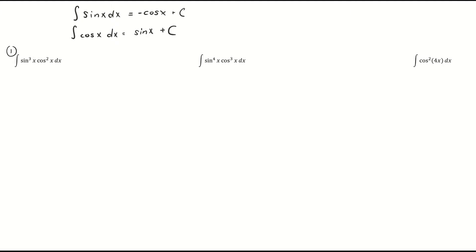What I'm going to do is look at the odd power — whichever trig function has the odd power — and peel off one of them. I'm going to take one of those sines and put it at the end. So now I have sine squared x times cosine squared x times sine x dx, because this sine squared and this sine x together equal sine cubed, which is what I originally had.